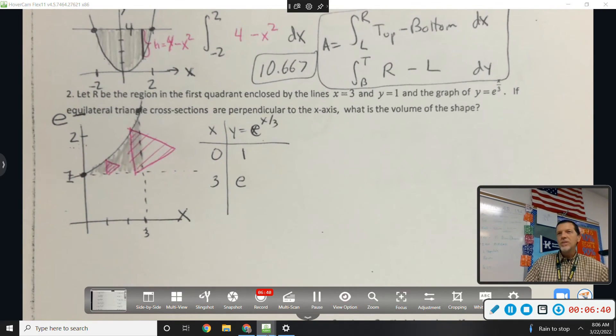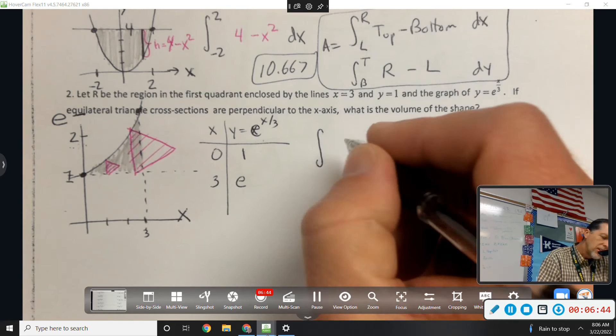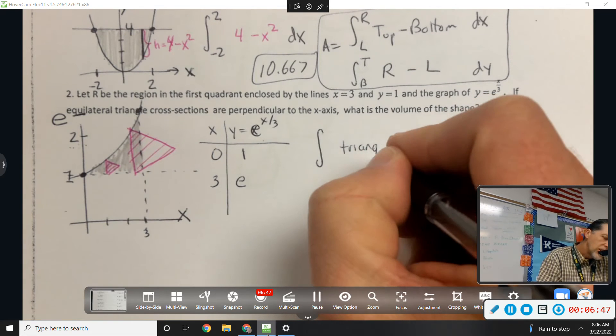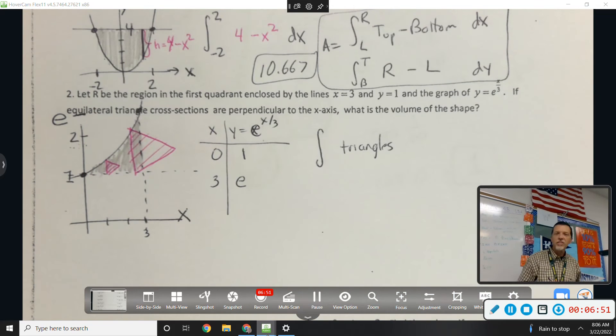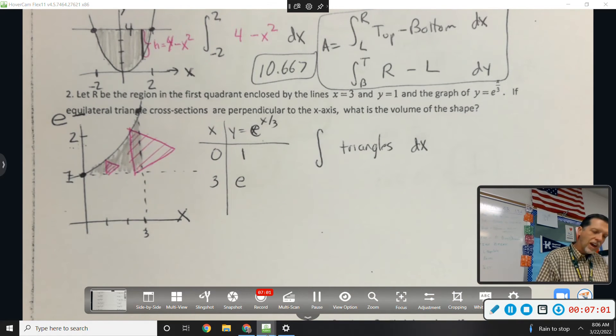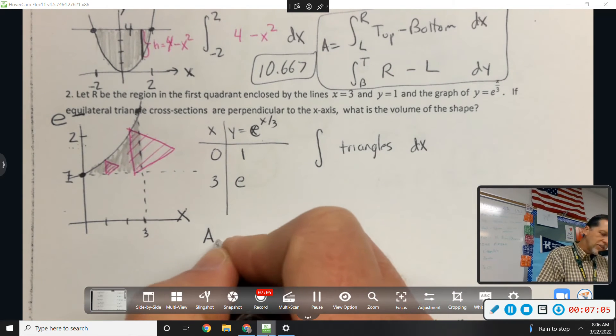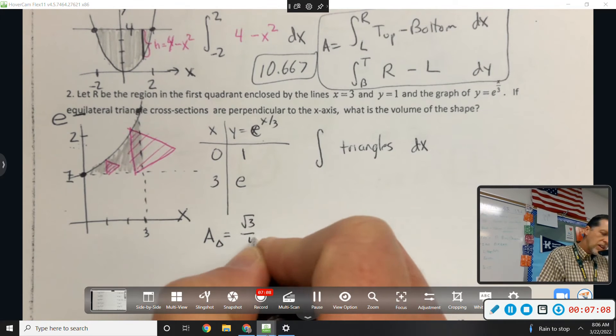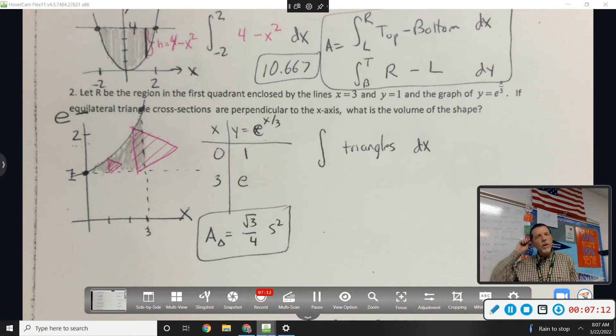So, equilateral triangles coming up out of the page. So I need to add up all of the triangles. What's the thickness of those triangles? And the same question is, are they stacked up in the x-direction or in the y-direction? The x-direction. So their thickness is dx. The area of an equilateral triangle, here's something you need to memorize: root 3 over 4 times s squared.